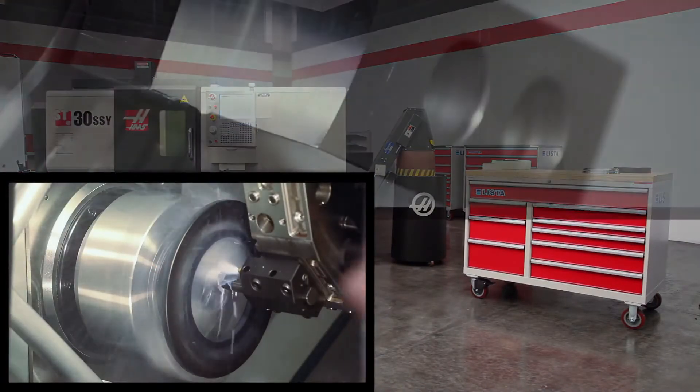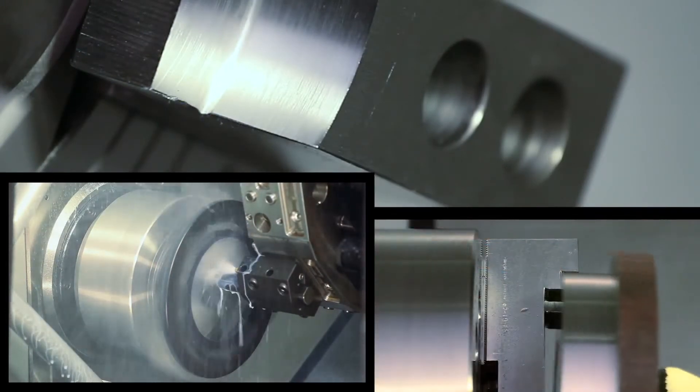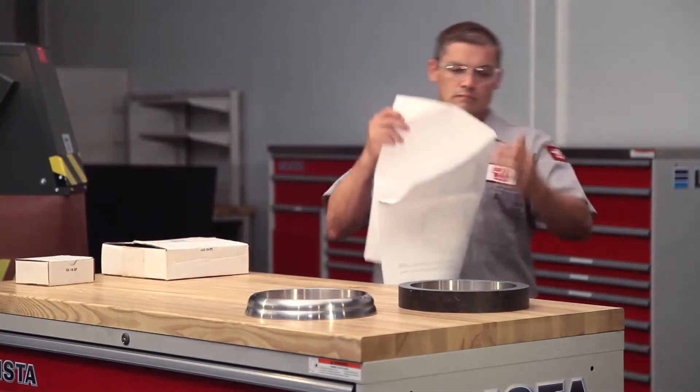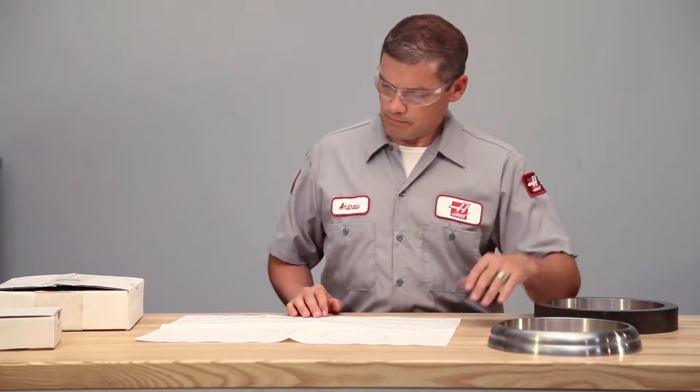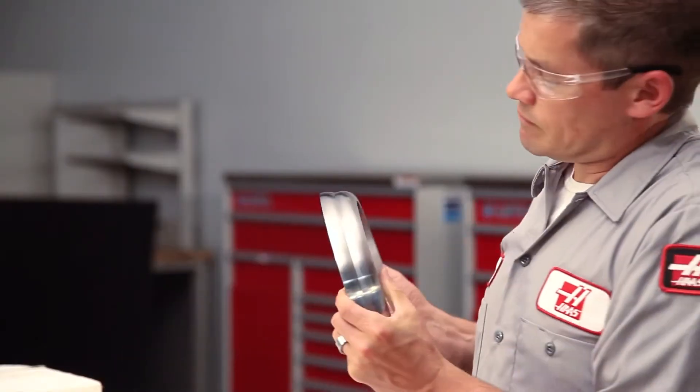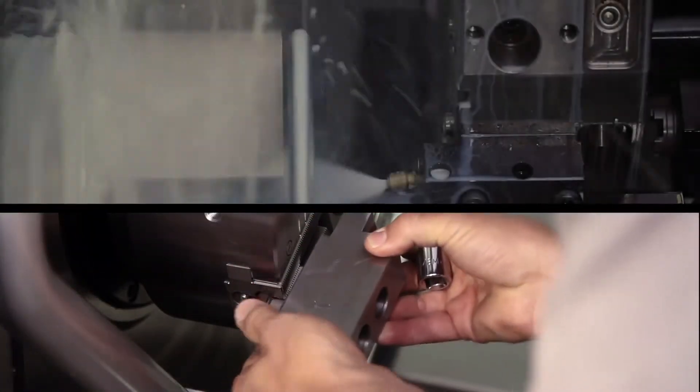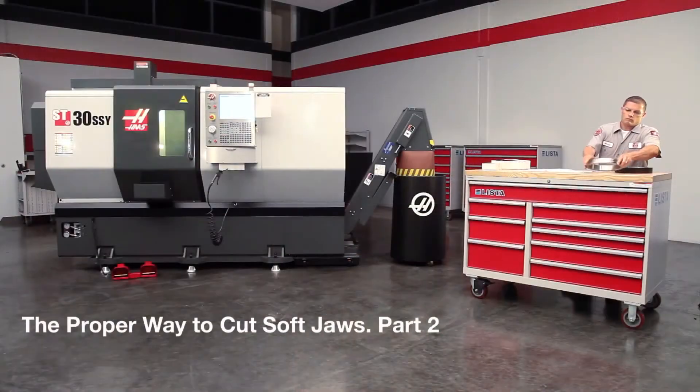In our first video, we learned about the fundamentals of cutting lathe soft jaws when we made two different sets of OD gripping jaws. In this second video, we are once again joined by Andrew, who will now cover the important aspects of ID gripping jaws using this ring cap as an example. We also cover re-cutting your jaws, as well as how and when to add a taper to jaws to achieve a perfect fit.